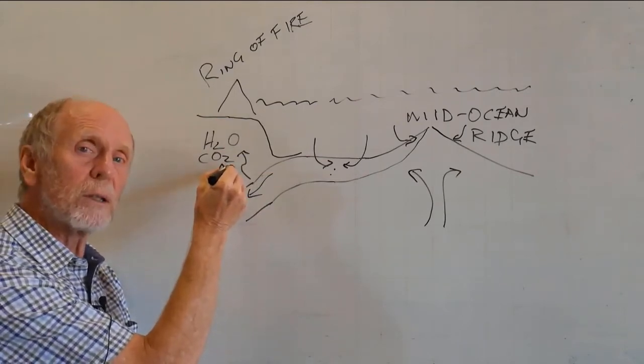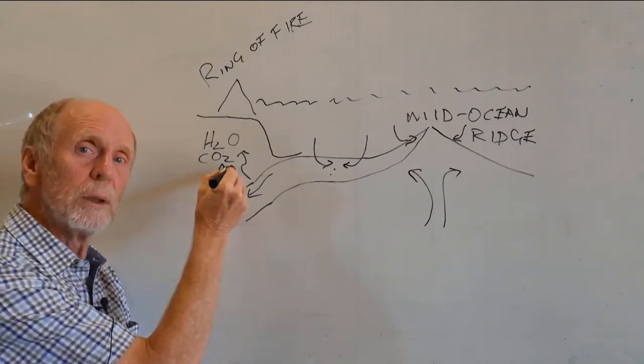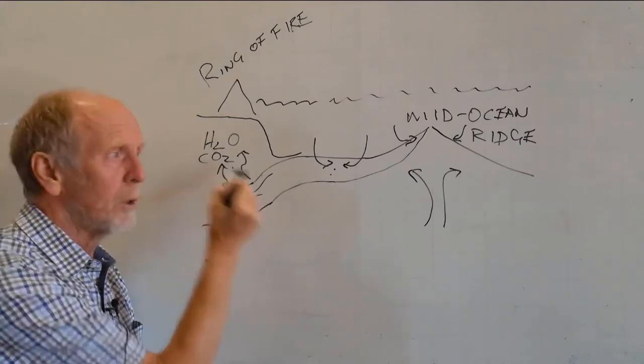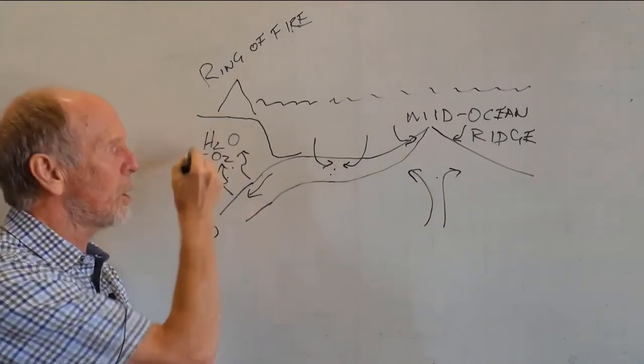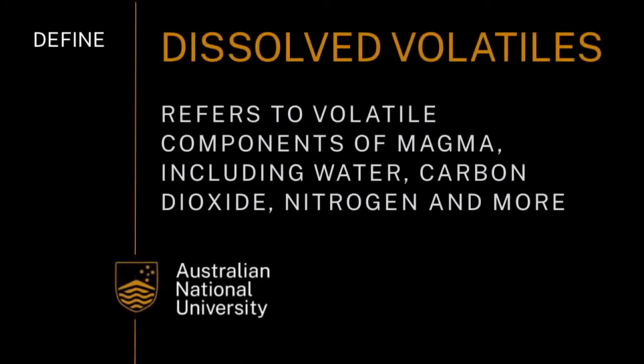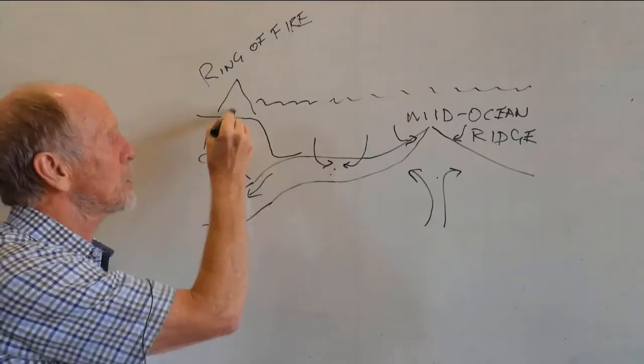Release of those volatiles into the mantle triggers melting. You make new magma here. You've made magma here. You're now making another kind of magma here, with a lot of dissolved volatiles in it.